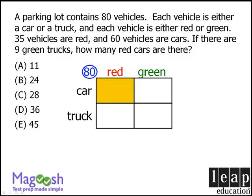In the top-left box we'll place red cars, in the top-right box green cars, in the bottom-left box red trucks, and in the bottom-right box green trucks. The question tells us that we have 35 red vehicles. Some of those are cars and some are trucks, so we don't have enough information to place any of them in the individual boxes yet. However, since 35 vehicles are red, we know the sum of those two red boxes must be 35, so we'll add that here.